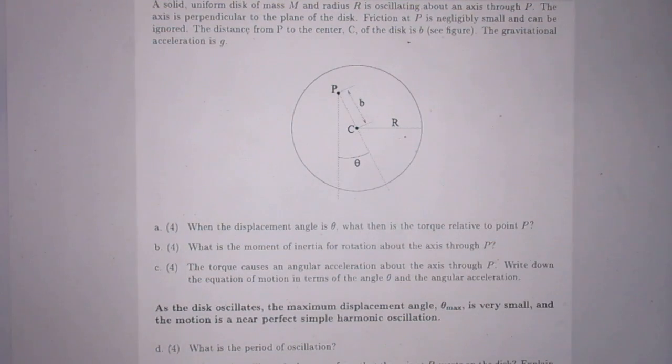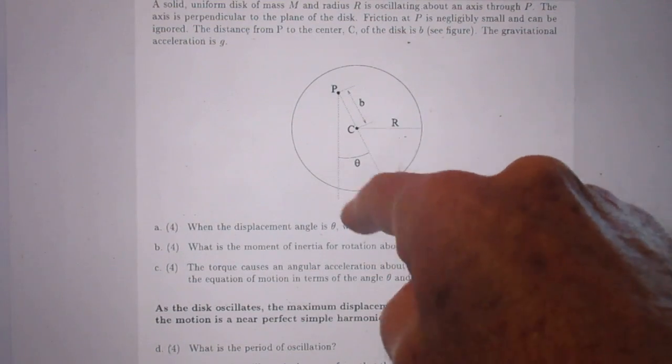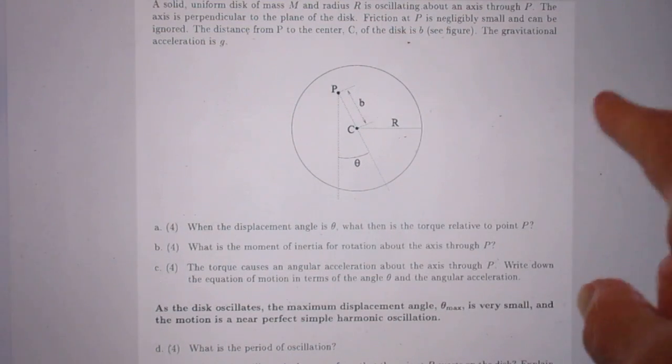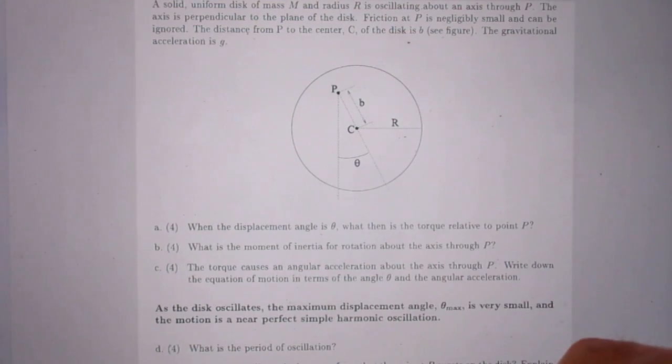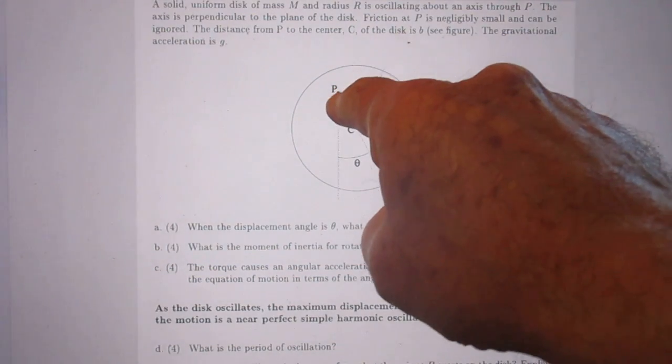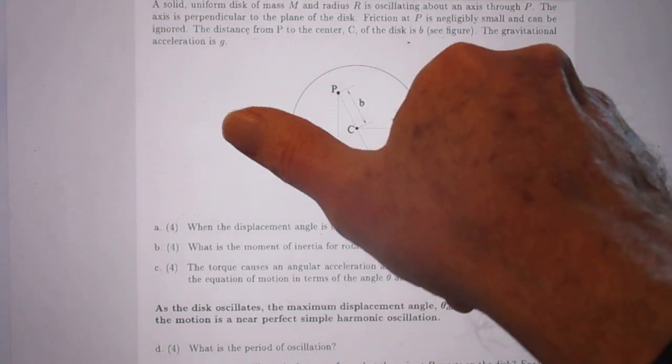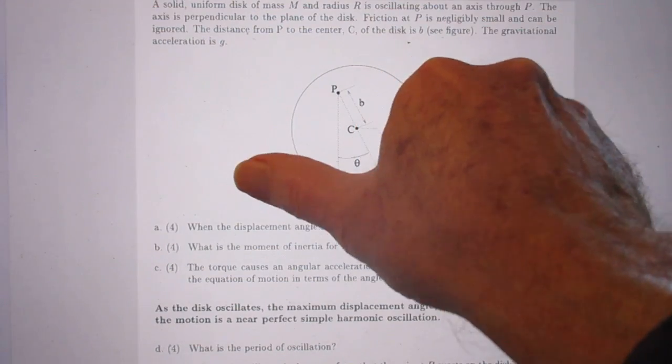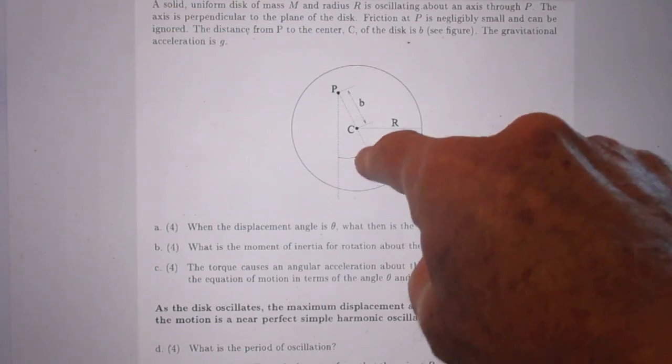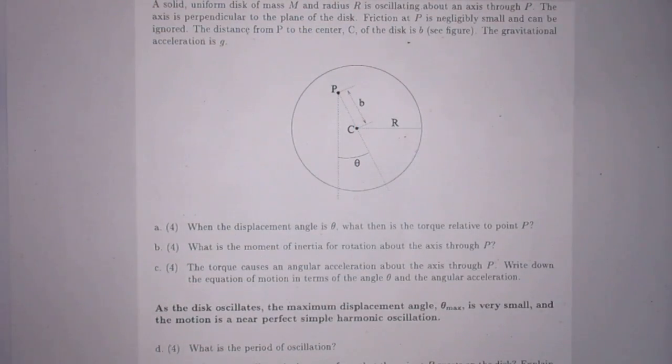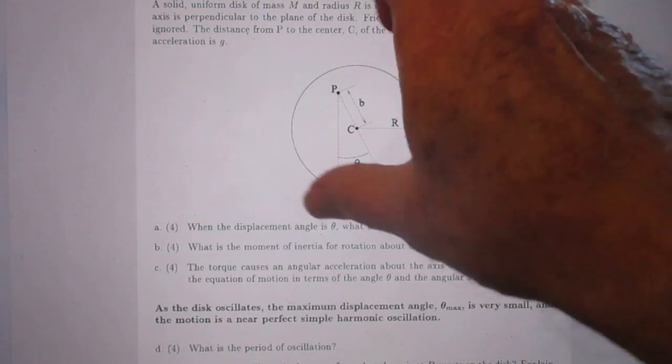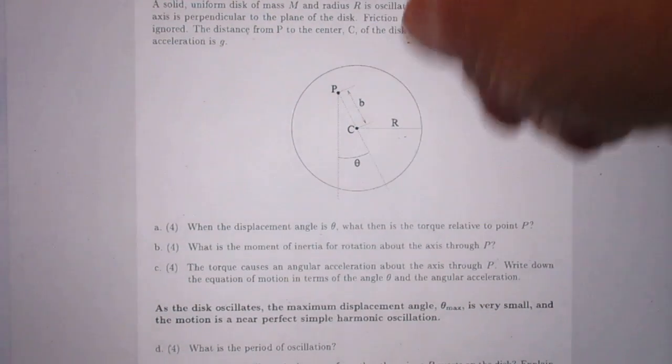We have a solid disk here. This is the center of the disk. It's a uniform disk, radius of the disk. We rotate the disk through an axis perpendicular to the paper through point P. And we offset it in counterclockwise direction over an angle theta. There will now be a torque in clockwise direction to drive it back to equilibrium.